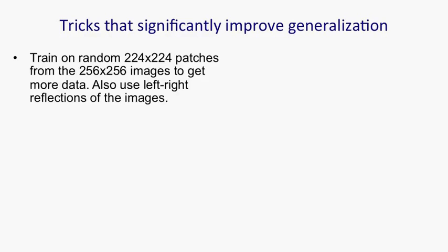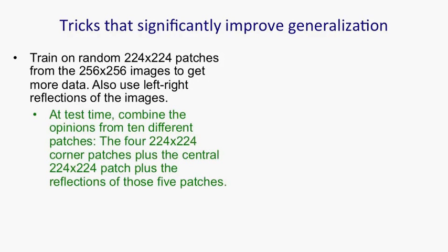There are other tricks used to significantly improve generalisation. First, data augmentation using transformations: the images in the competition were downsampled to 256 by 256, but Alex Krizhevsky took random 224 by 224 patches, giving hugely more images to train on and helping with translation invariance. He also used left-right reflections, doubling the data further, but not up-down reflections because gravity is important. At test time, he uses ten patches — the four corners and the middle, plus their left-right reflections — runs all ten through the network and combines their opinions.